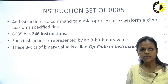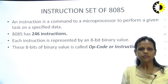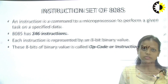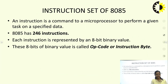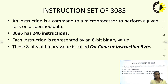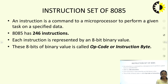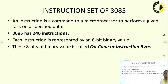First, we should know what instructions are. An instruction is a command to a microprocessor to perform a given task on a specified data. The 8085 has a total of 246 instructions. Each instruction is represented by an 8-bit binary value, and these 8 bits of binary value are called opcode or instruction byte.